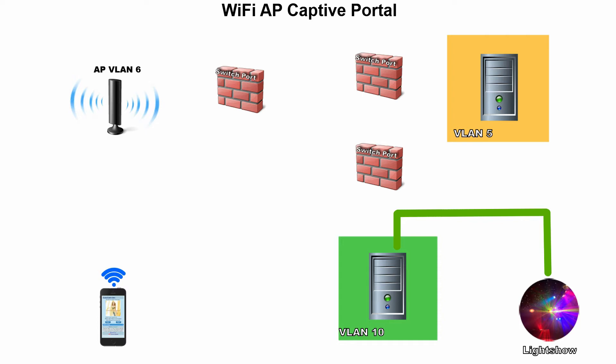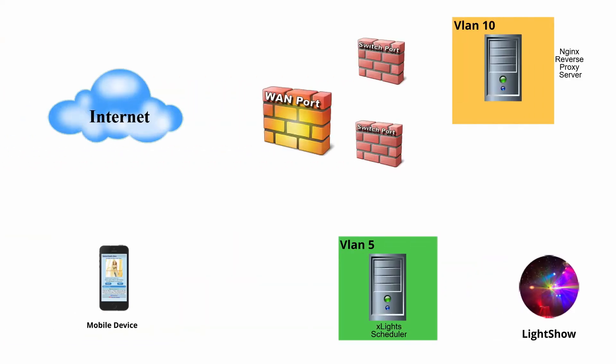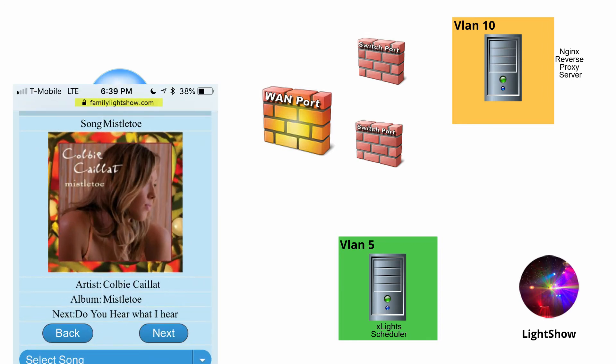The power of the radio in the Wi-Fi connection scenario could be lowered to ensure that users need to be in front of your house to be connected to the Wi-Fi access point. The downside to this scenario is that there is a connection process with multiple steps.